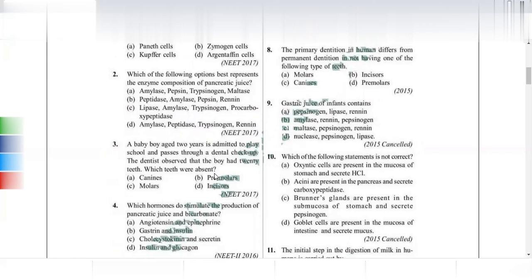The gastric juice of infants contains renin, pepsinogen, and lipase. Infants drink milk, which contains the milk protein casein and milk fat. Pepsinogen acts on protein, lipase acts on fat, and renin acts on casein. The composition is therefore suited for milk digestion.